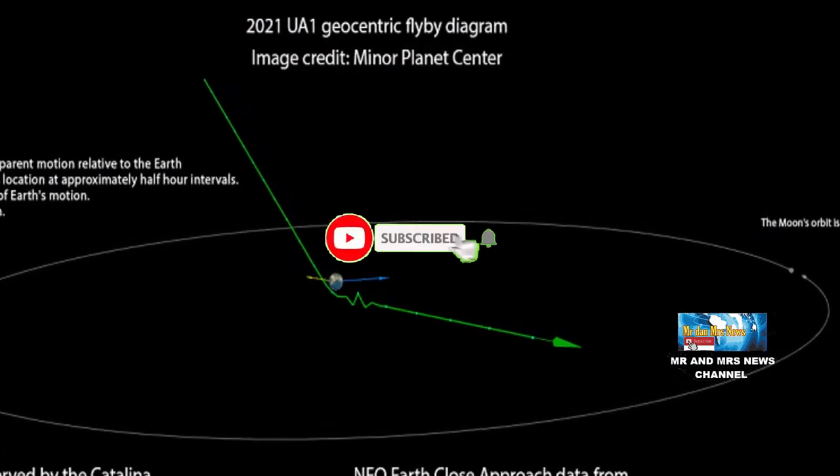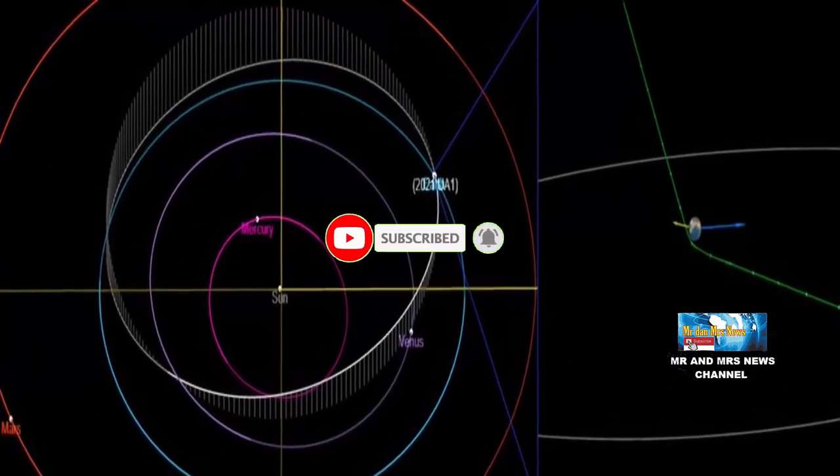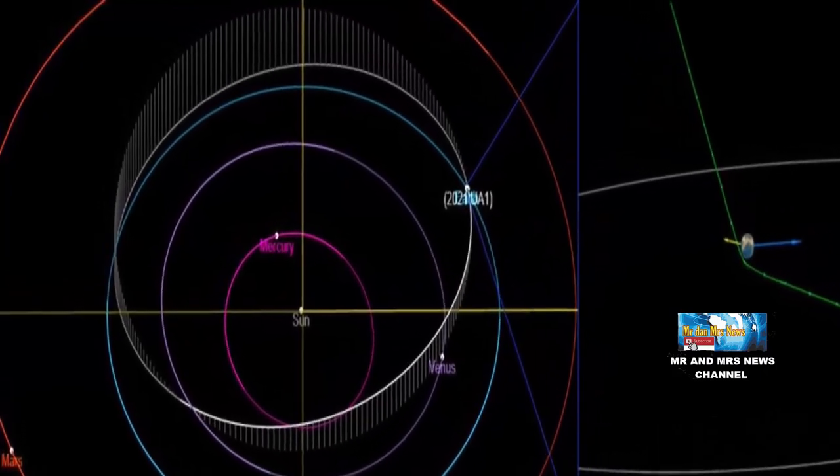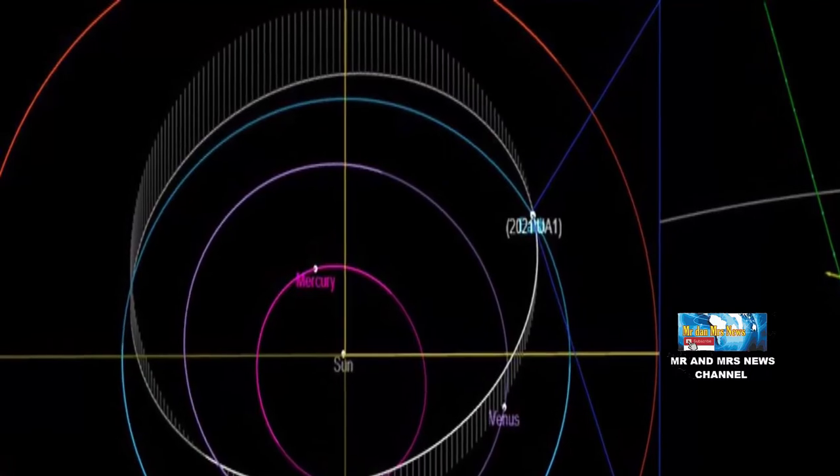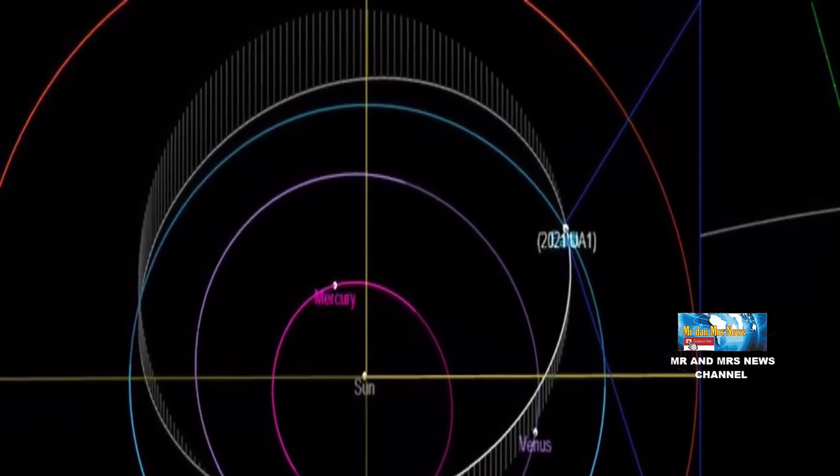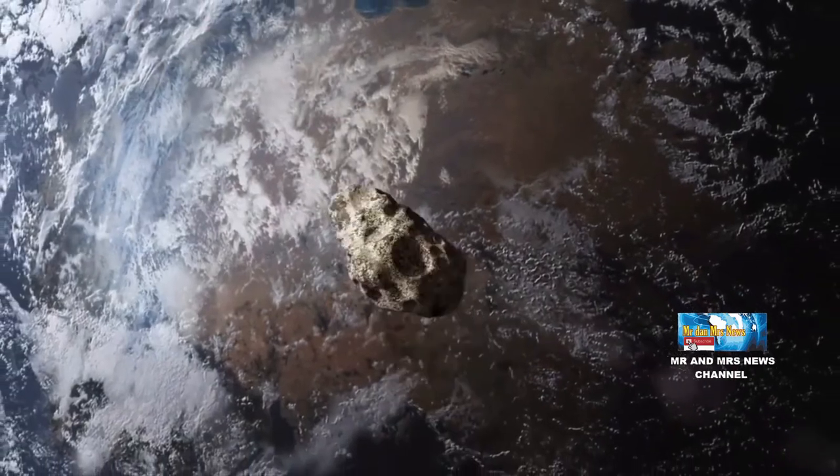Jarak asteroid 2021 UA1 saat melintas dapat menghantam bumi jika lintasannya menjadi sedikit lebih dekat. NASA menyebut sebagian besar asteroid kecil luput dari pantauan mereka, seperti asteroid 2021 UA1 yang hanya berukuran sebesar kulkas.